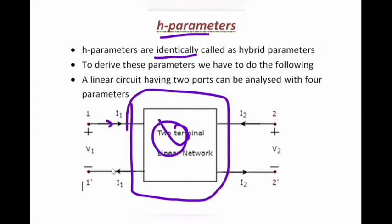At the input port, i1 is the entering current and i1 is the leaving current — these are equal, so this forms one port. At the output port, i2 is the entering current and i2 is the leaving current — these are equal, forming another port. This total network is a two-port network. At the input port v1 is the voltage and at the output port v2 is the voltage.